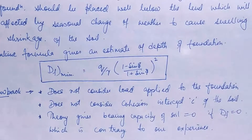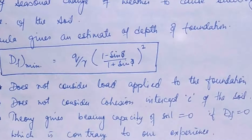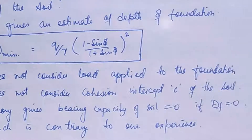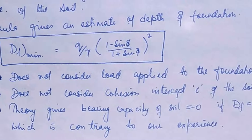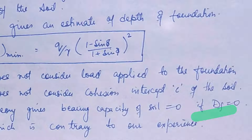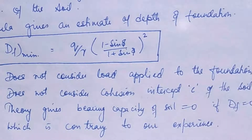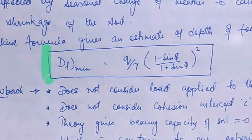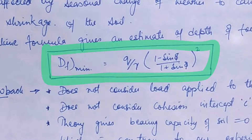This formula has drawbacks: it does not consider the load applied to the foundation, does not consider the cohesion intercept C of the soil, and the theory gives bearing capacity of soil equal to zero when the depth of foundation is zero, which is contrary to our experience. Despite these drawbacks, we still use this formula for calculation purposes.